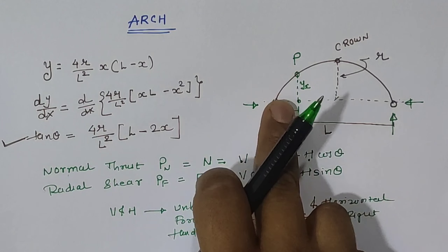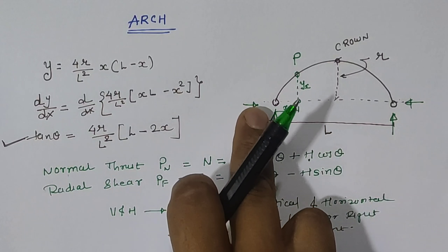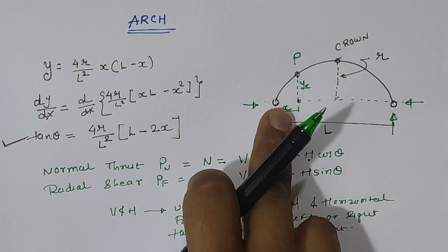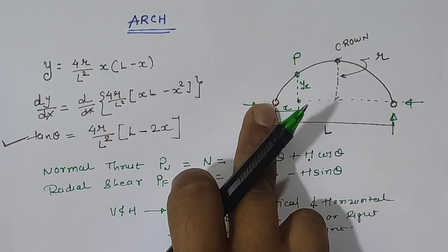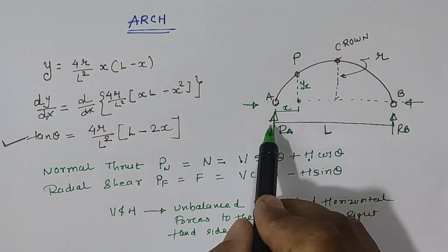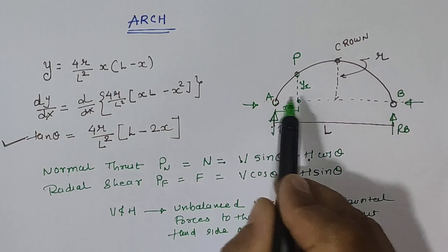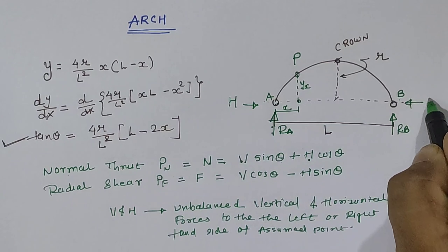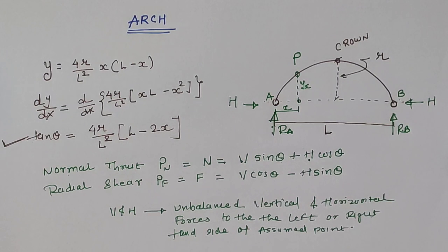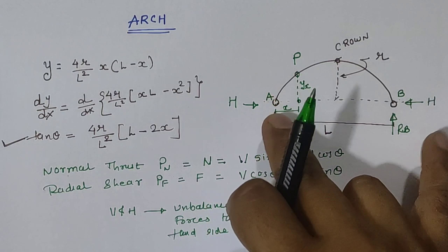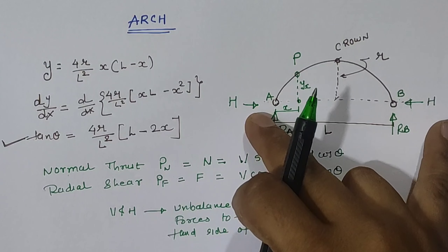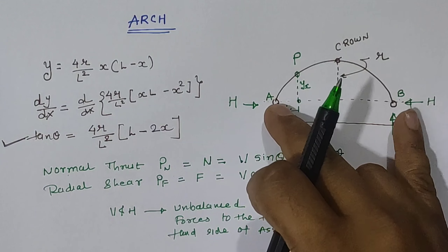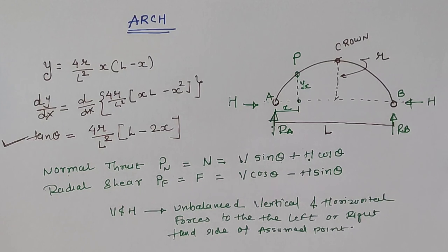According to the hinge support, we have two reactions: one vertical and one horizontal. Reaction at A, reaction at B, as well as capital H as the horizontal thrust at point A, which is equal for both joints at A and B. We first need to find the total reactions in order to determine the unbalanced vertical and horizontal forces. These are the equations which are going to be used for the analysis of the arch.